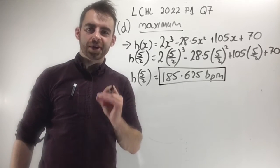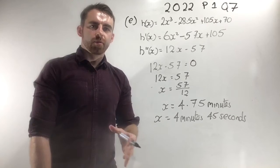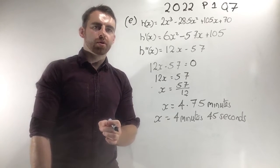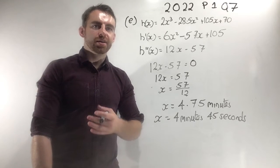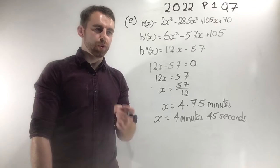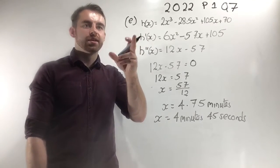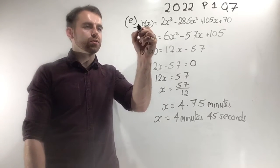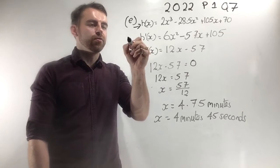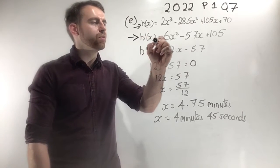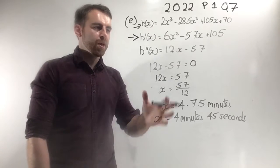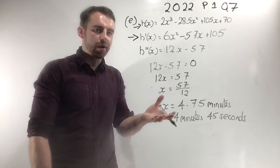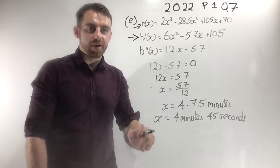So the minimum heart rate was 70 beats per minute and the maximum is 185.625 beats per minute. For part e, the maths is simple but the logic is trickier. We want to work out how long after she starts exercising her heart rate is decreasing most quickly. h(x) is just her heart rate, nothing to do with the rate of change. The first derivative represents the rate at which her heart rate is changing, and if I sub in different values for x, sometimes her heart rate is not changing very rapidly and other times it is changing very rapidly.